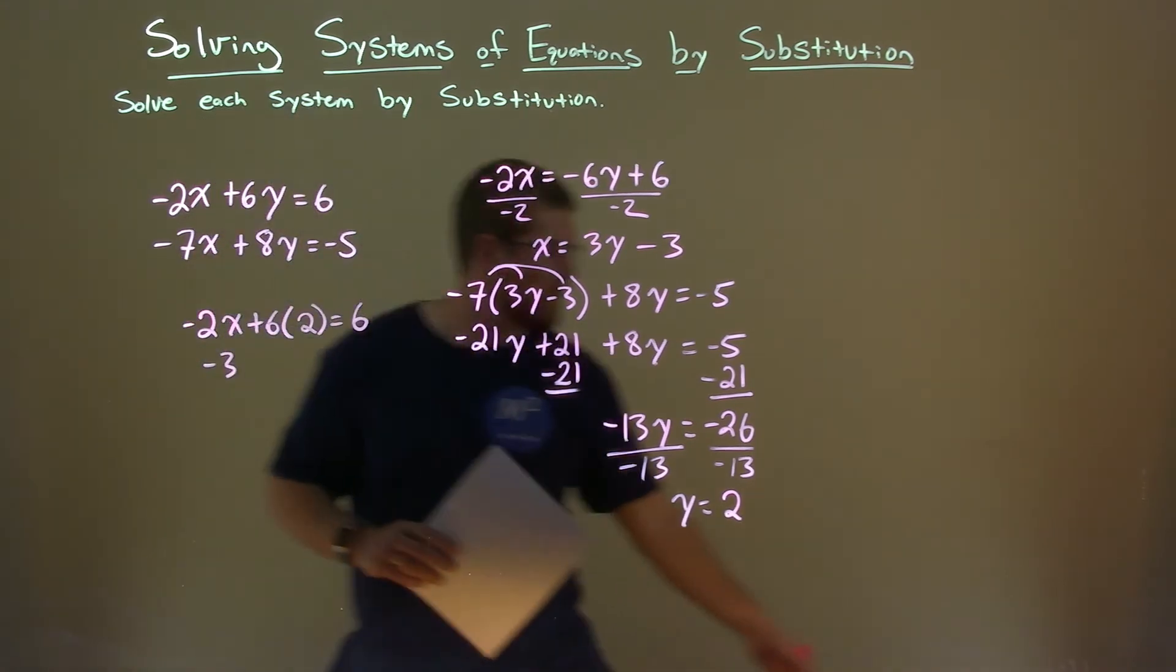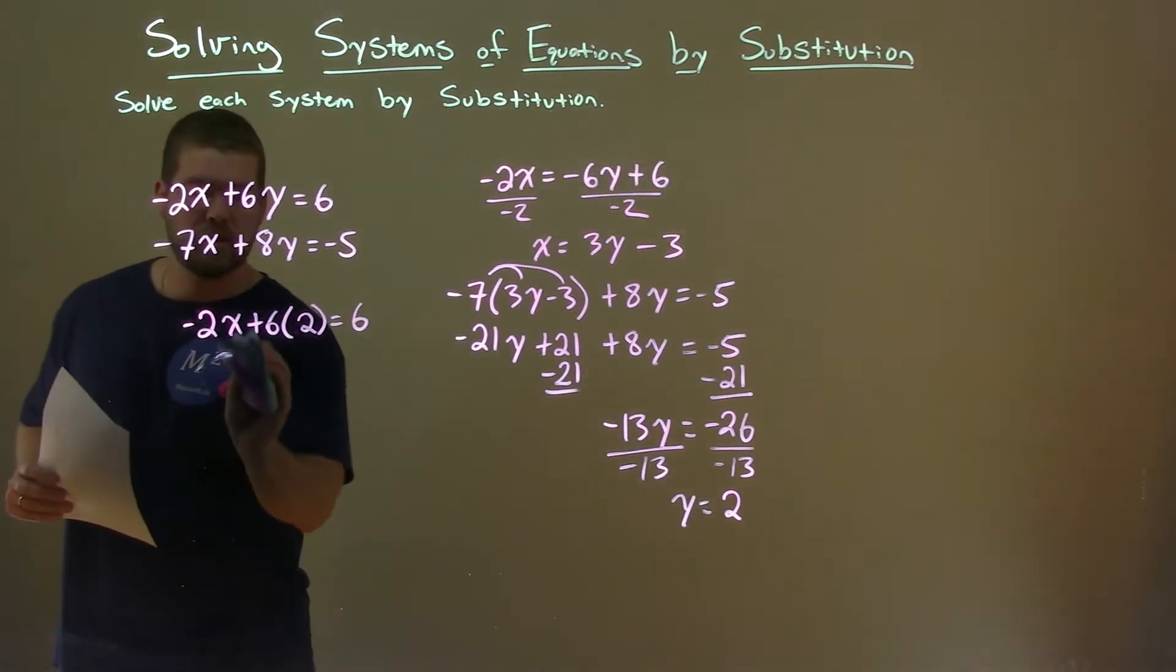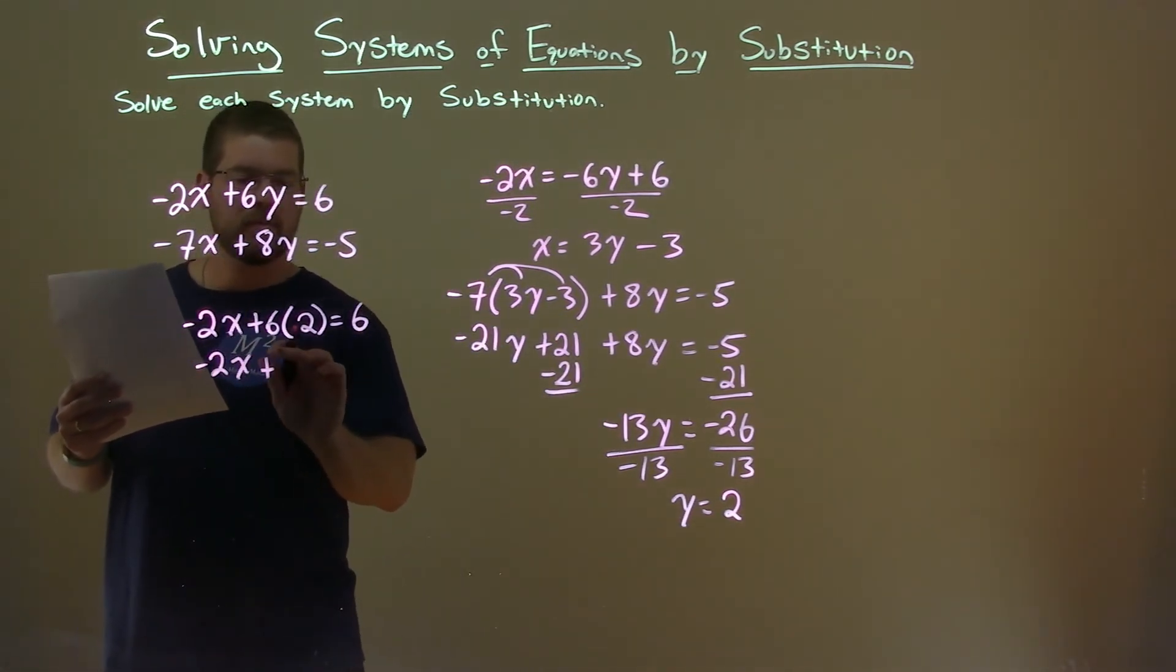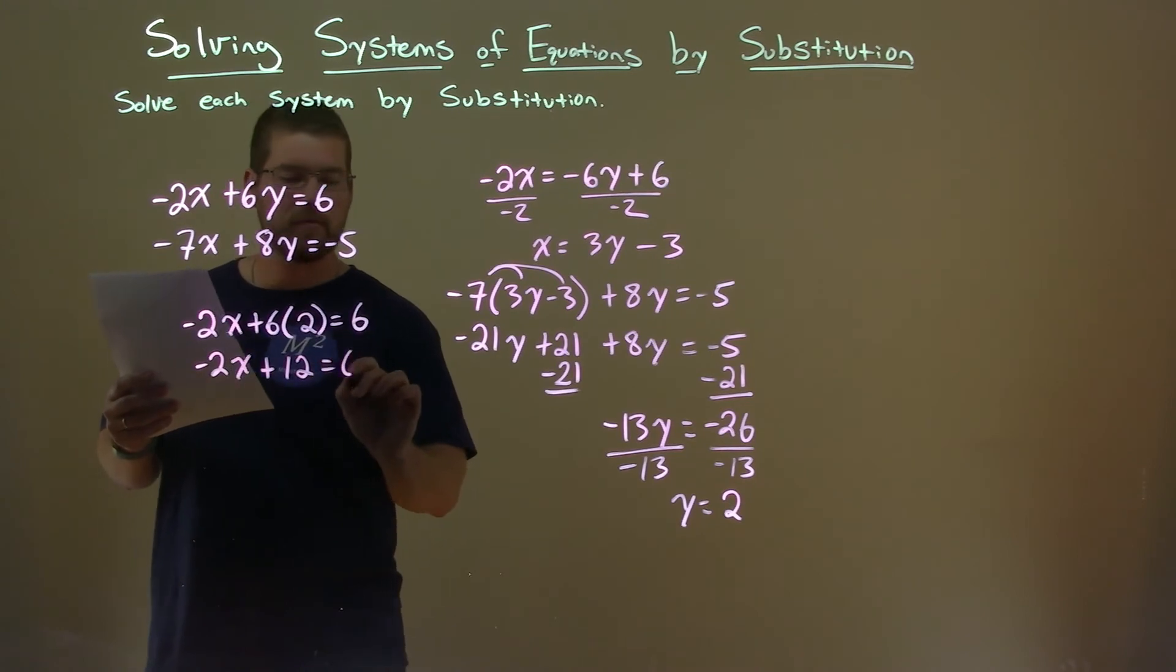Simplify. Oh, that's a 2 there. So we have minus 2x here plus 6 times 2 is 12 equals 6.